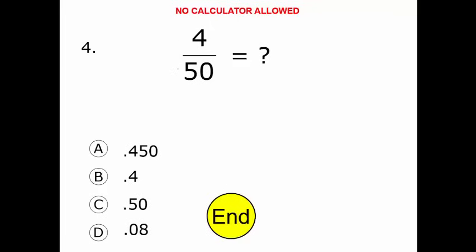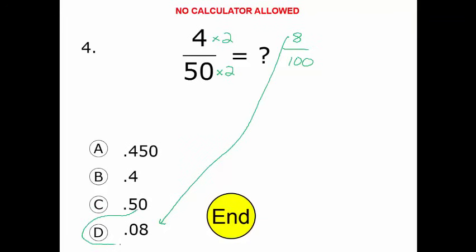If I had a calculator, I'd just take 4 divided by 50 and I'd be done. Since I don't, I have to convert this to decimal form. I need to get the denominator to 100, so I take that times 2. I also take the top times 2, and that gives me 8 over 100, which is equivalent to 0.08. The answer is choice D.